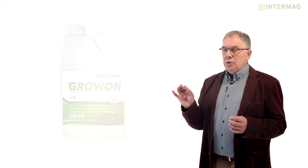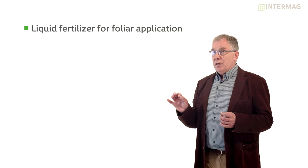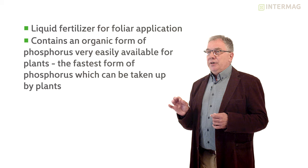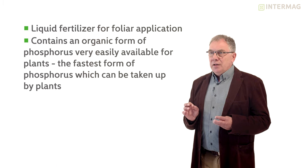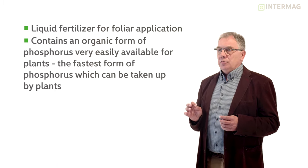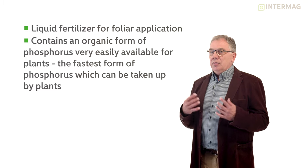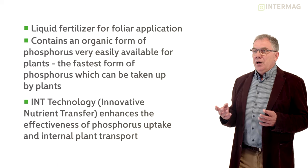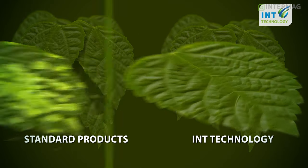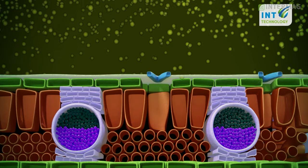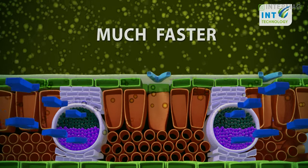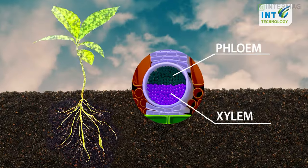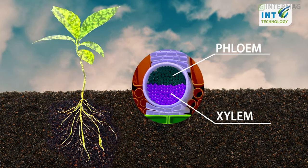It's a liquid fertilizer for foliar application. It contains an organic form of phosphorus which is very easily available to plants and it is the fastest form of phosphorus which can be taken up by plants. It is also equipped with the INT technology. INT means Innovative Nutrient Transfer which enhances the effectiveness of phosphorus uptake from leaf surface and increases the internal transportation of that nutrient, which makes this product very efficient.